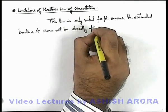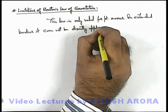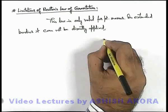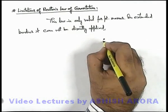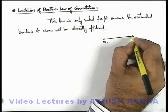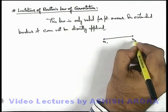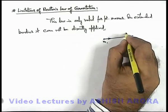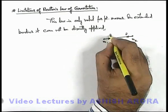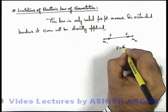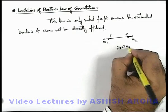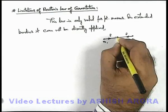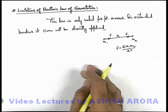The reason is, we have discussed Newton's law of gravitation in such a way that if there are two point masses m₁ and another mass m₂, these will attract each other with a force F, and the magnitude of force can be given as F = Gm₁m₂/r², where r is the separation between the two.